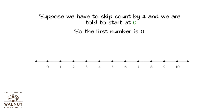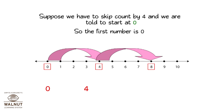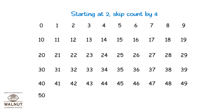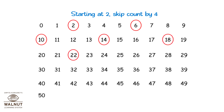Suppose we have to skip count by four and we are told to start at zero. So the first number is zero, then four, and then eight. This is how we skip count by four. Starting at two, skip count by four: two, six, ten, fourteen, eighteen, twenty-two, twenty-six, thirty, thirty-four, thirty-eight, forty-two, forty-six, and fifty.